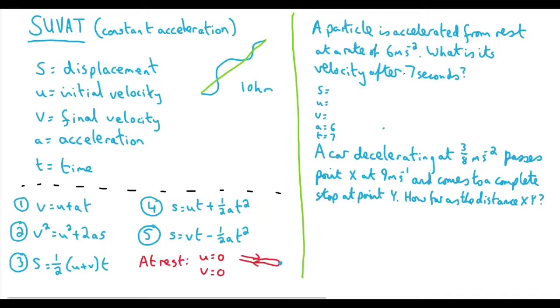But we do actually have more information. If at first we just write out our acronym just to make a note of what we have and what we don't. Say we have that the acceleration is six. We have that the time is seven. We're after the velocity after this time. So we'll consider that the final velocity. Now, actually, we do know a fourth thing. We know our U because it's accelerated from rest. It's starting from rest. It's starting where U is zero.